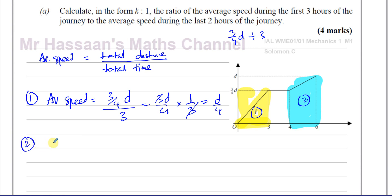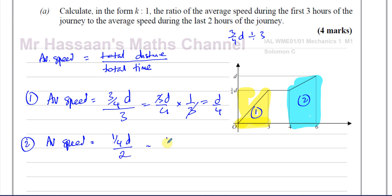For the second part of the journey, the average speed is: the distance travelled is a quarter d — it's three-quarters to one whole, so it's a quarter d — but this time divided by two hours. So it's a quarter d multiplied by one-half, which gives you d over eight.